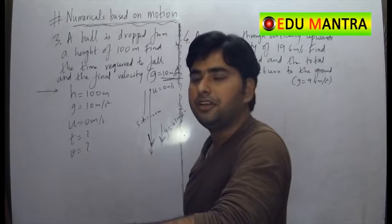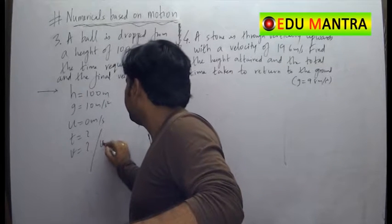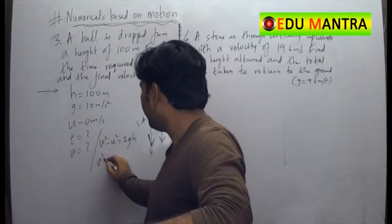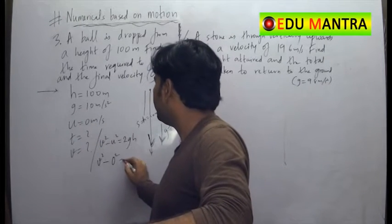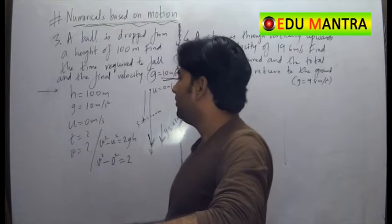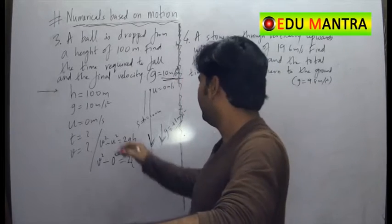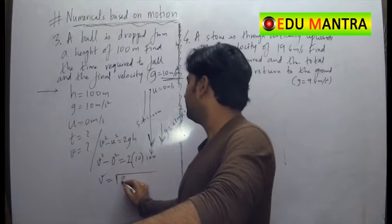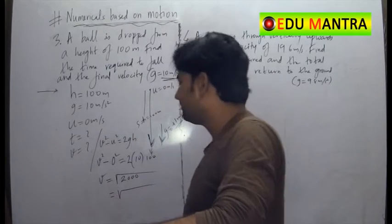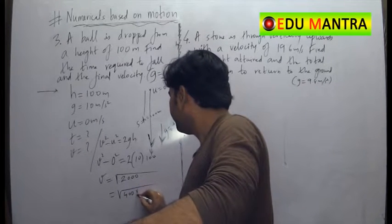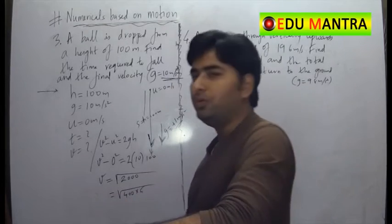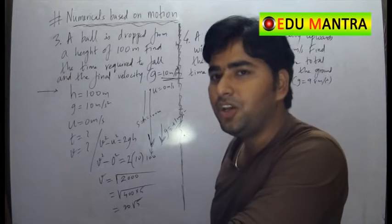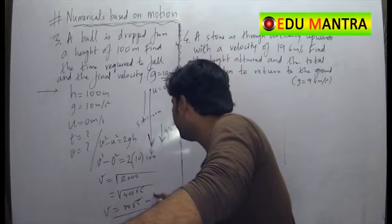For final velocity, we use the formula v² - u² = 2gh. u is 0, so v² = 2 × 10 × 100 = 2000. Therefore v = √2000 = √(400 × 5) = 20√5. The final velocity is 20√5 meters per second.